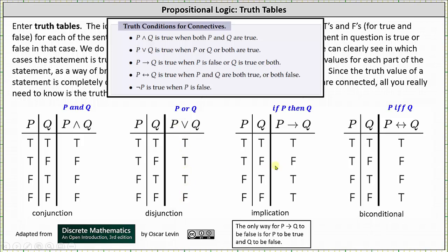Next we have the truth table for 'if p then q.' It is false only when p is true and q is false — seen in the second row — otherwise it is true. And on the far right we have the truth table for 'p if and only if q,' which is true when p is true and q is true, or when p is false and q is false; otherwise it is false.